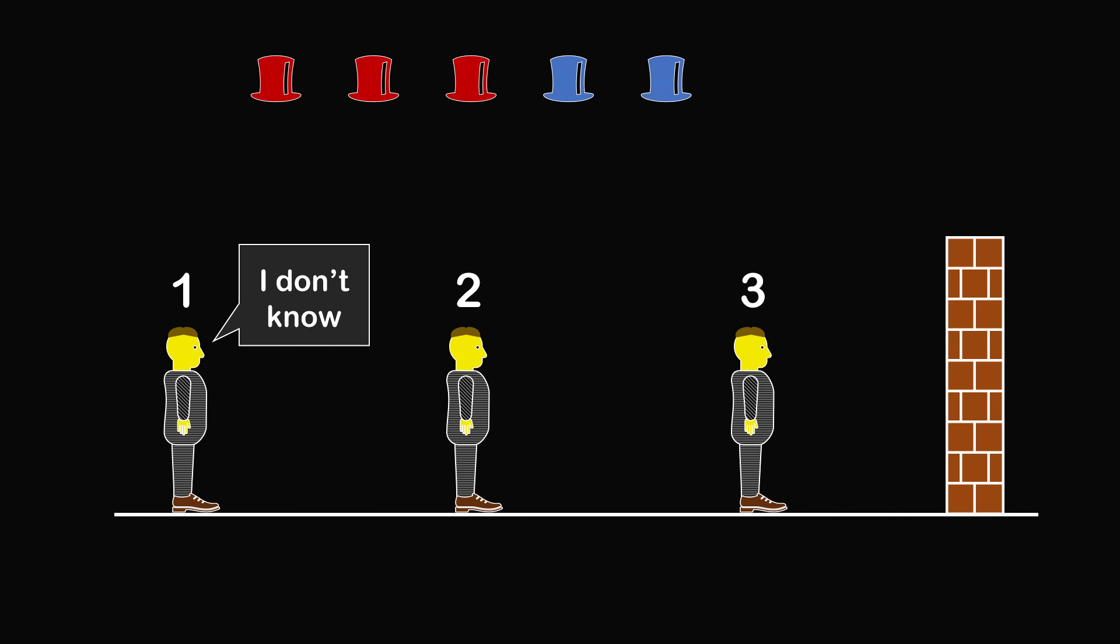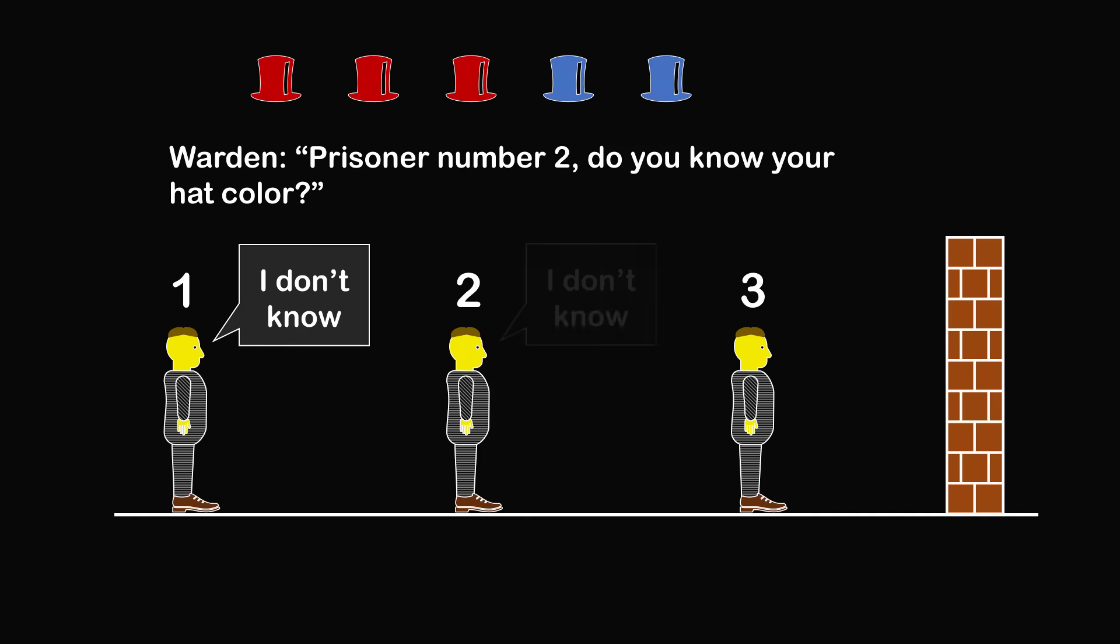The warden then asks prisoner 2, Do you know your hat color? The prisoner 2 replies, I don't know. Finally, the warden asks prisoner 3, Do you know your hat color? Prisoner 3 replies, I know.